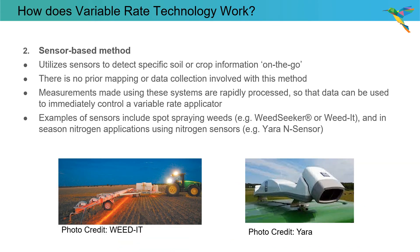In a sensor-based system, we utilize sensors to detect specific soil or crop information on the go. There is no prior mapping or data collection involved with this method. Measurements made using these systems are rapidly processed and that data can then be used to immediately control a variable rate application. Examples of sensors include spot spraying weeds using WeedSeeker or WeedIt technology, or in-season nitrogen applications that use nitrogen sensors such as Yara's nitrogen sensor.